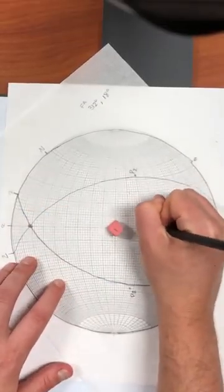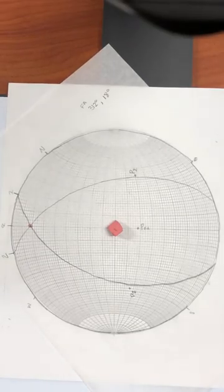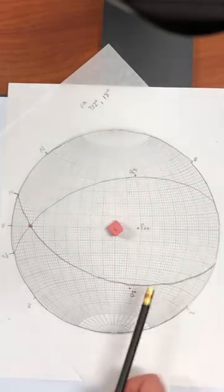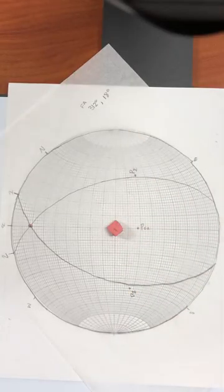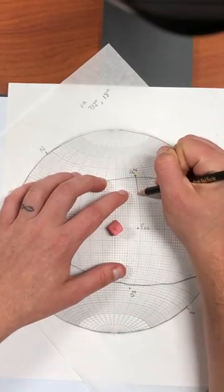And so this is the pole to the fold axis, which is not really a pole, but we're going to mark it as a point. Now this pole defines a plane where we can accurately count the interlimb angle. So let's go ahead and draw in that great circle.